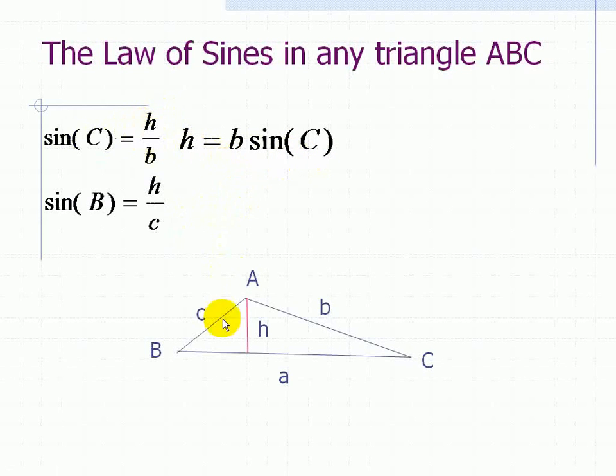Also, we note for the other triangle that the sine of B is the opposite over the hypotenuse. In this case, it's h over c. Similarly, we can say that now h is equal to c times the sine of B.